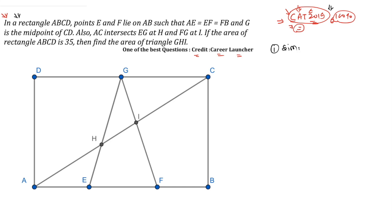Now let's start solving the question. We are going to use three concepts: similarity, and the sine formula ratio for area. In the given data, AE, EF, and FB are equal — meaning these three segments are in ratio 1:1:1. Also, DG and GC are equal because G is the midpoint of CD, so that ratio is also 1:1.